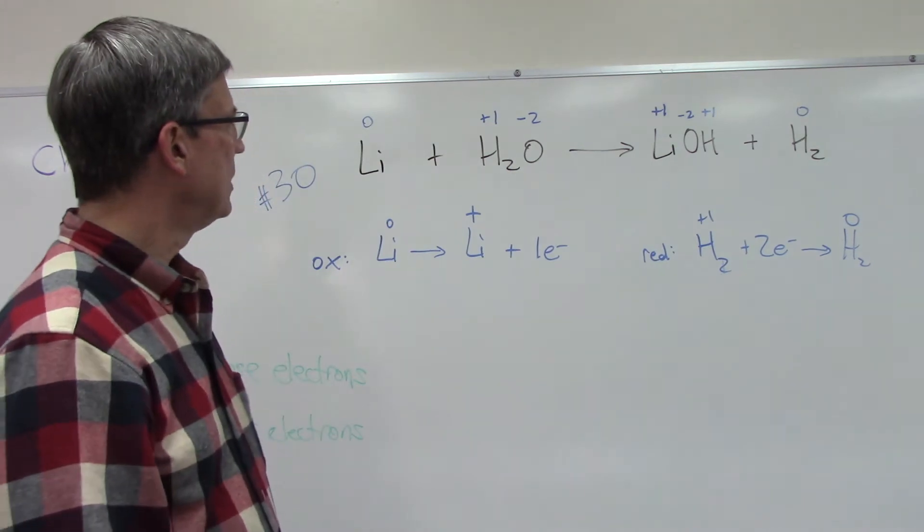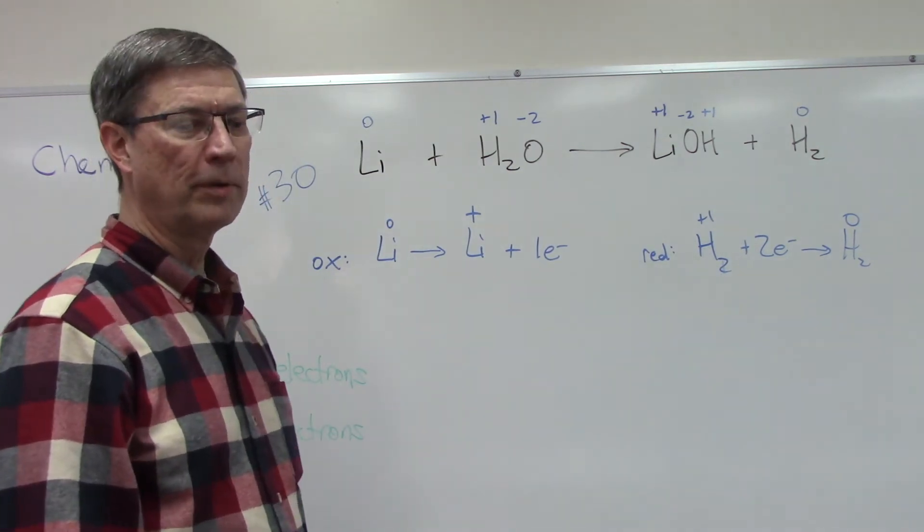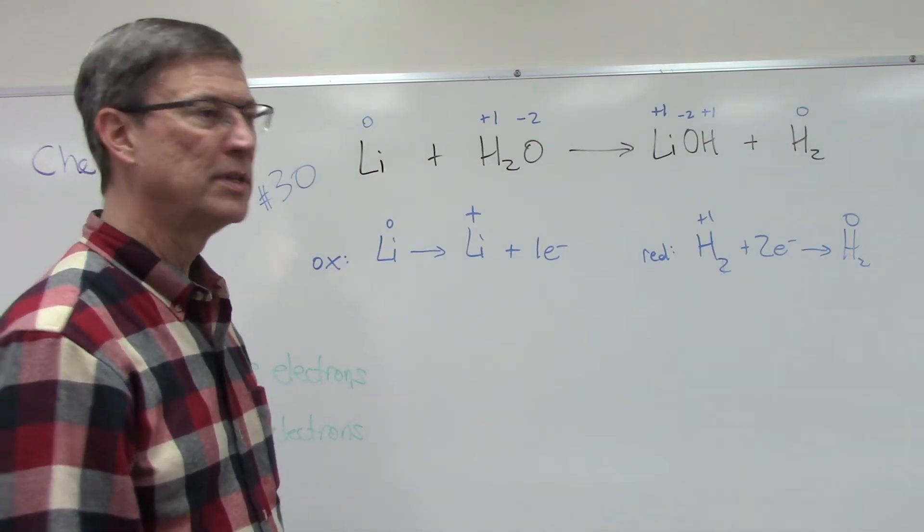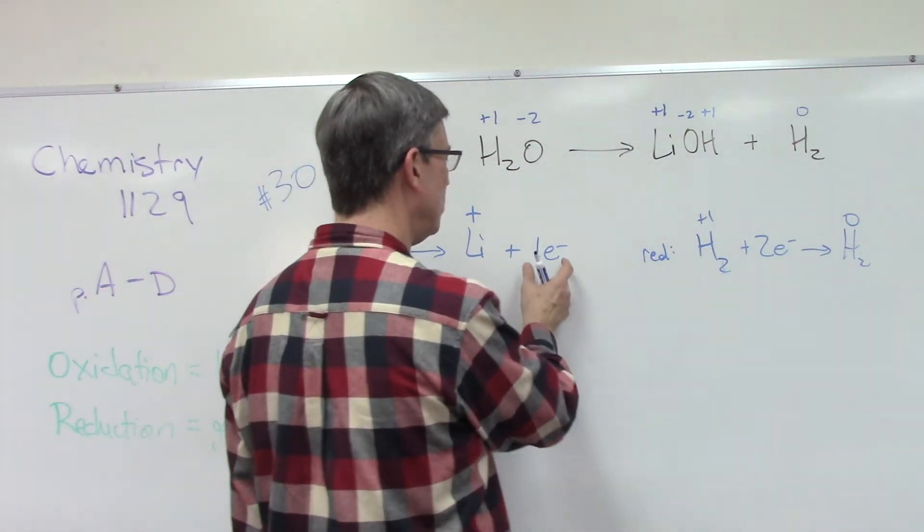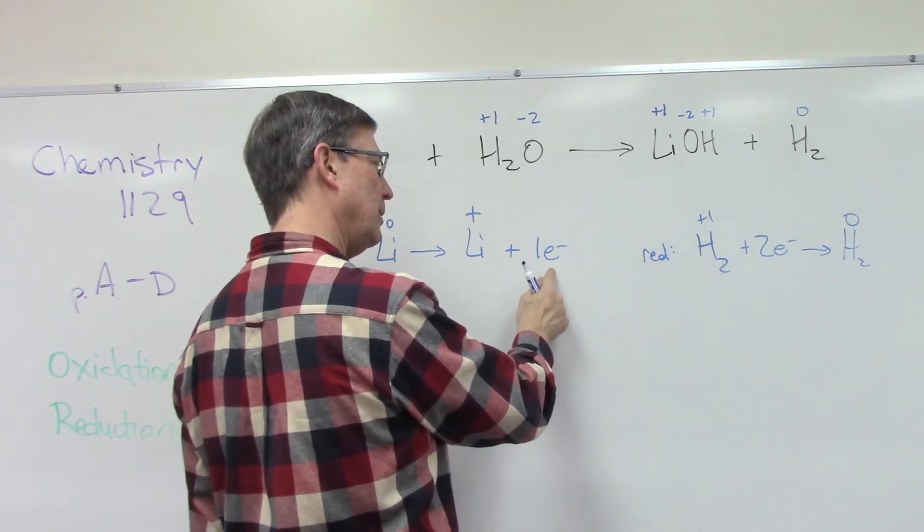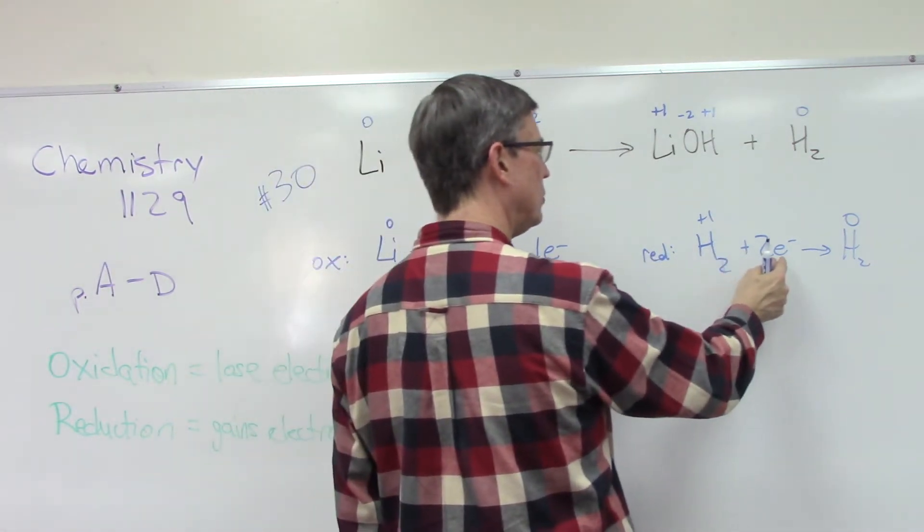An electron gets added to each hydrogen in order to turn it from being positive to being neutral. Now let's look at the number of electrons. Are they the same? No, the number of electrons being transferred here is one electron. Over here we have two electrons.